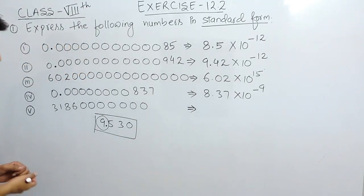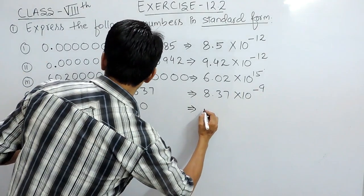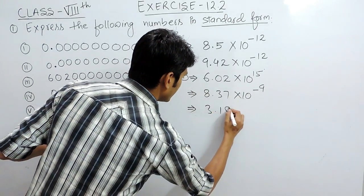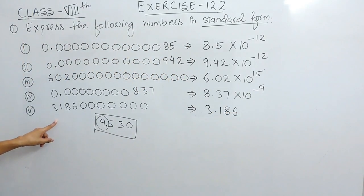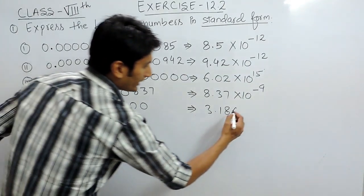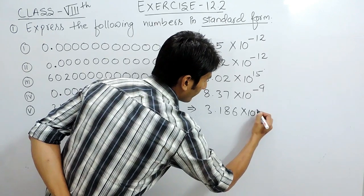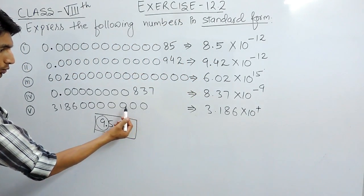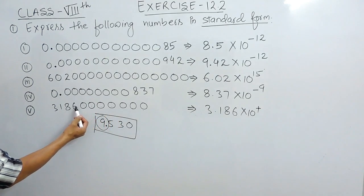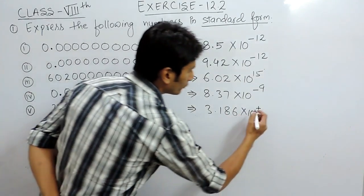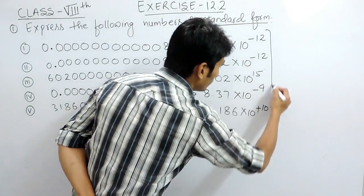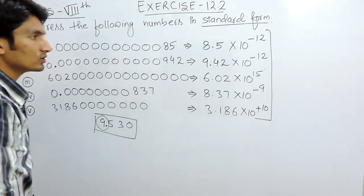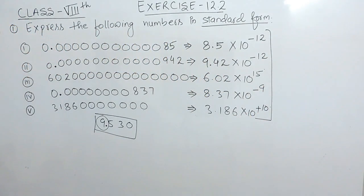In the last part, to write this in standard form, you have to write it as 3.186. Again, you are shifting the decimal to the left hand side, so you write the power of 10 as positive. You are shifting 10 digits, so the power would be plus 10. So this is how you can solve these numbers.